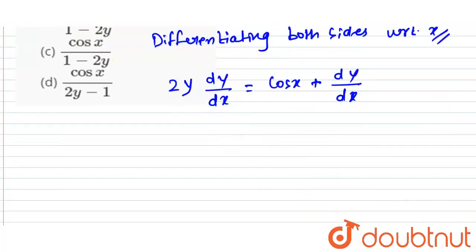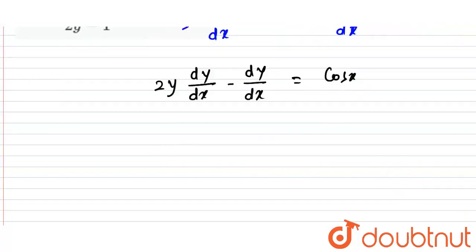Then this equation becomes 2y dy/dx minus dy/dx equals cos x. By taking dy/dx common here, then this is 2y minus 1 equals cos x.